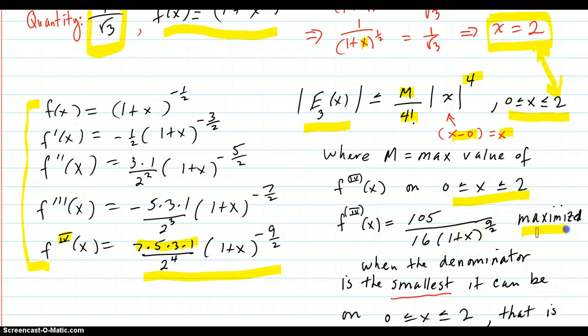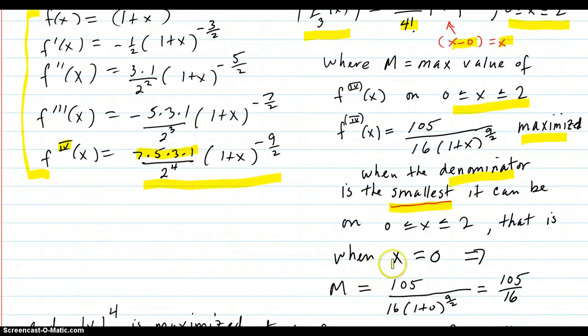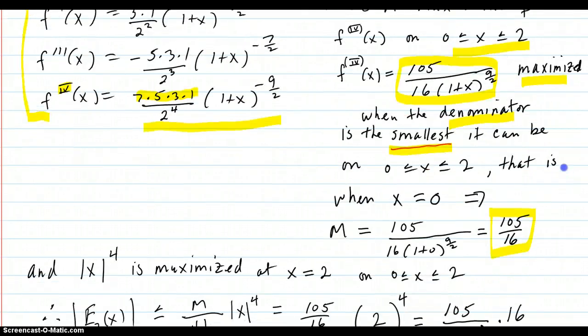And that's maximized when the denominator is the smallest it can be. So that is when x equals 0. When x equals 0 this fraction is the largest it can be. And that is when you plug in x equals 0 you get 105 sixteenths. So that's what m is.